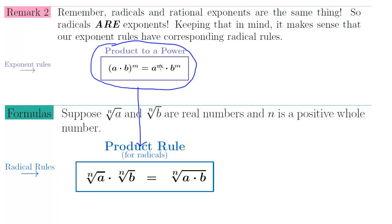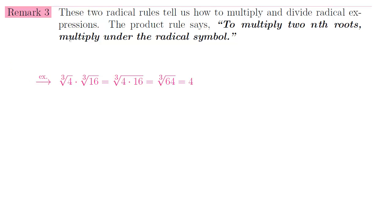Reading the rule from right to left: when you multiply a to the m times b to the m, you get a times b to the m — meaning a and b are both raised to the m power. The same idea applies to radicals: if you multiply the nth root of a times the nth root of b, you can just multiply underneath the radical to get the nth root of a times b. In words, the product rule says to multiply two nth roots, multiply under the radical symbol. And the quotient rule says to divide nth roots, divide under the radical symbol.